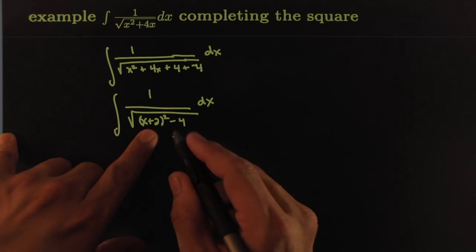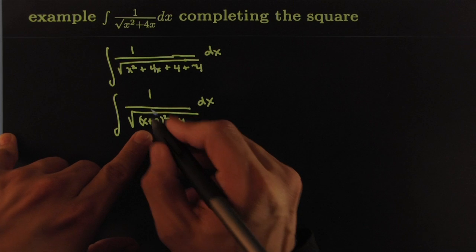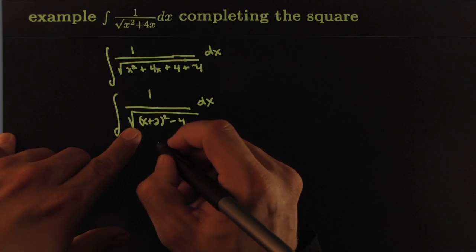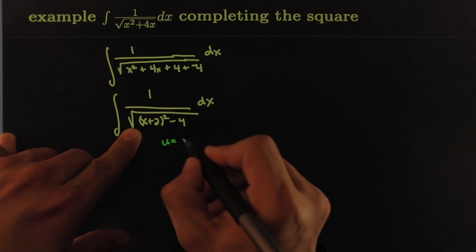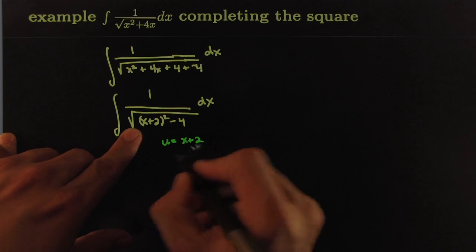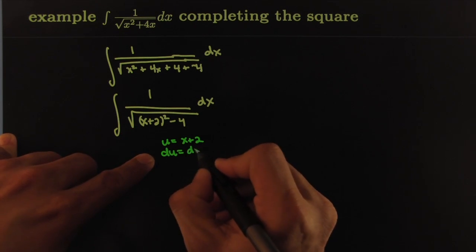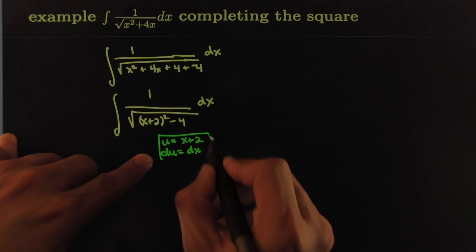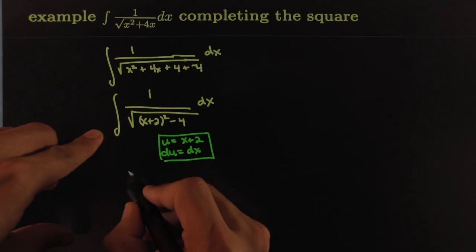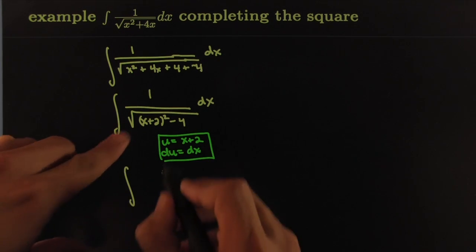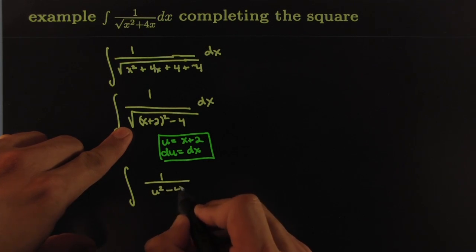This allows me to rewrite the expression as (x + 2)² − 4 dx, and now I can simplify this into one of the forms we've done already. We make a u-substitution: let u = x + 2. The differential du is exchangeable for dx. That turns the integral in terms of u into 1 over √(u² − 4) du.